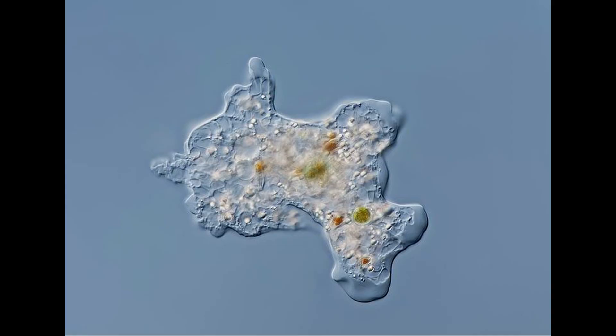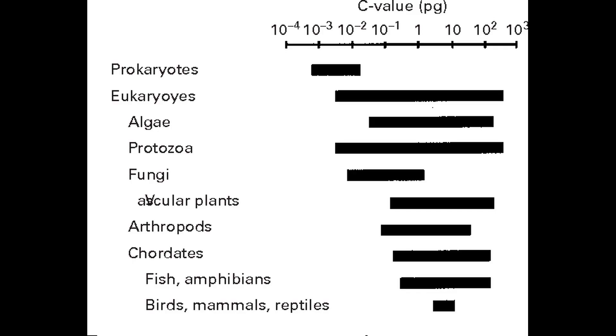The same is true of genome size. Our genome has around 3.2 billion base pairs, while the genome of amoeba proteus has some 670 billion base pairs. This curious observation is part of a problem that is known as the C-value enigma, which will get more attention in another video.